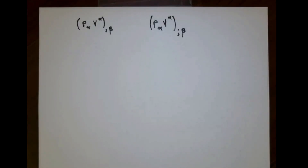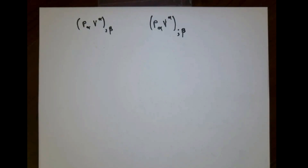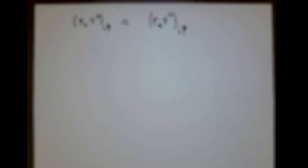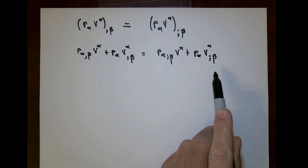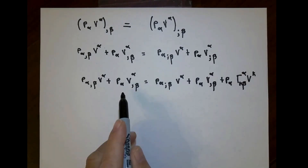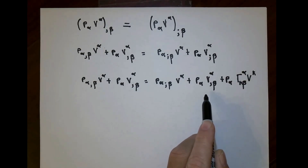If I have a scalar p_α v^α — that's a number associated with a given location, it doesn't depend on coordinates or basis vectors or any such thing — then the covariant derivative of p_α v^α would have to be the same as the ordinary partial derivative. Both the ordinary partial derivative and the covariant derivative obey product rules. We have already figured out how to do covariant derivatives of vectors, so v^α_{;β} is already known to us.